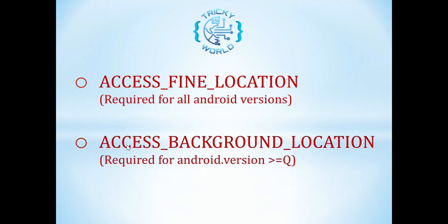The second permission is ACCESS_BACKGROUND_LOCATION. If your app is targeting Android version 10 or higher and you also want to get location updates while not interacting or using the application, then you will have to provide this additional location permission in the manifest file. So for devices having Android version 10 or higher, both ACCESS_FINE_LOCATION and ACCESS_BACKGROUND_LOCATION permissions are required to get the device location.